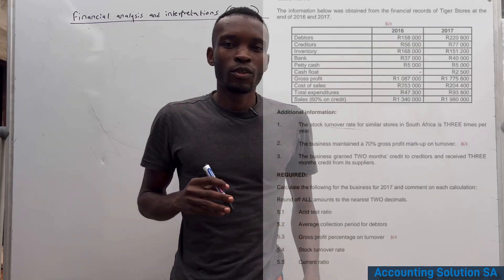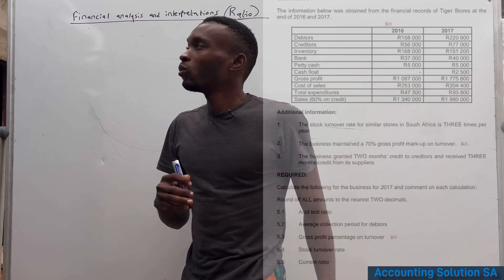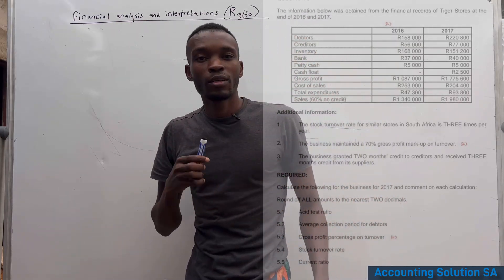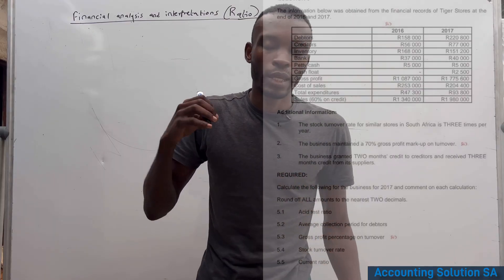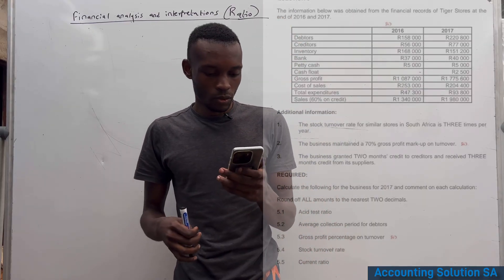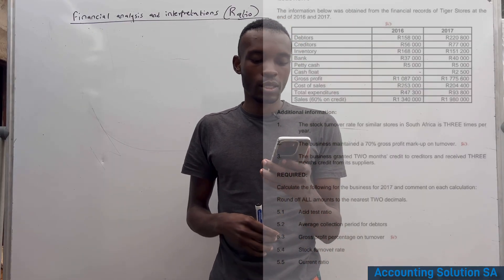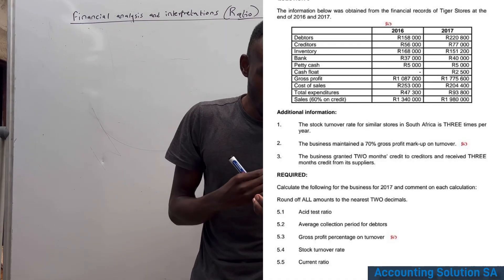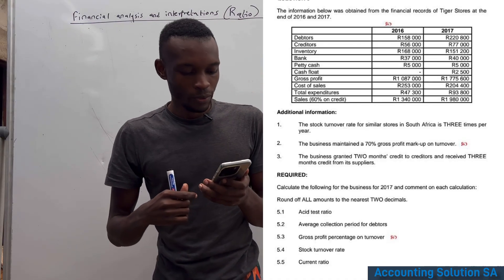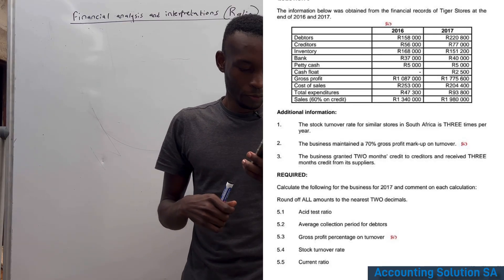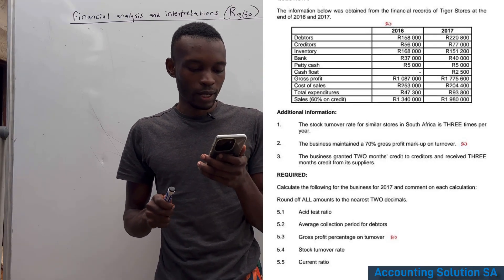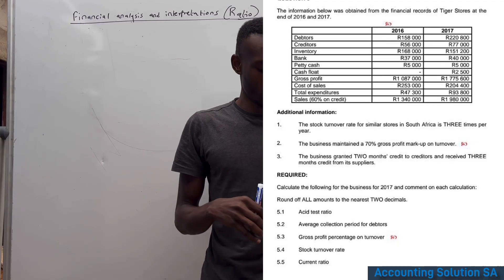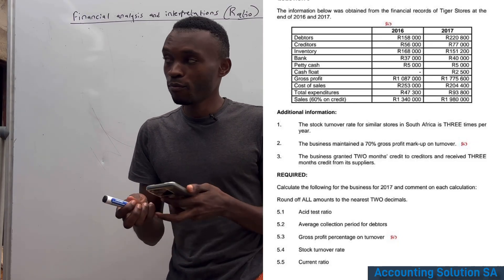In this video we are going to do financial analysis and interpretation, also called ratio analysis. We have been given information and a required section, so let's start with question 5.1.